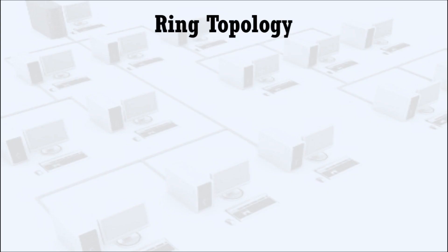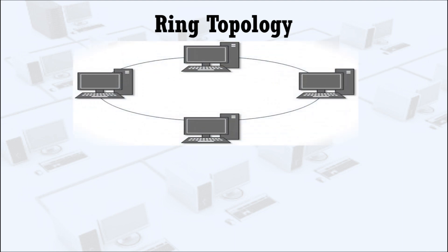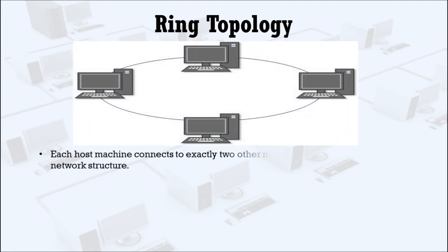Firstly, let's take an image. In ring topology, each host machine or node connects to exactly two other machines or nodes, creating a circular network structure. This structure in the image shows how the nodes are arranged in the ring topology.